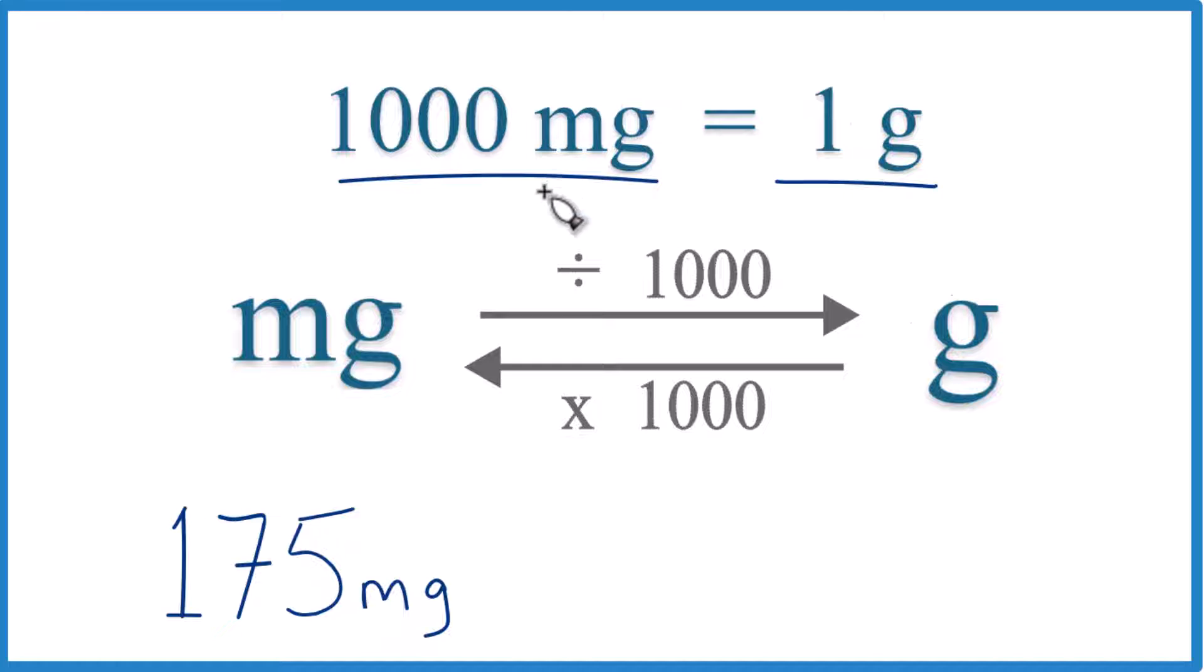We could say one gram equals 1,000 milligrams. This is what we call a conversion factor. We need that when we're going from milligrams to grams or grams to milligrams.